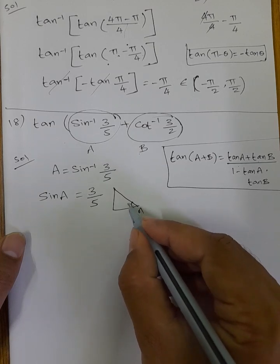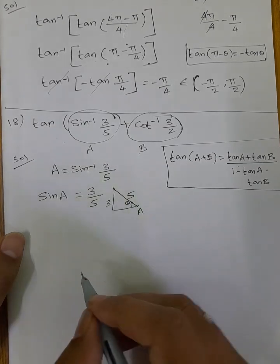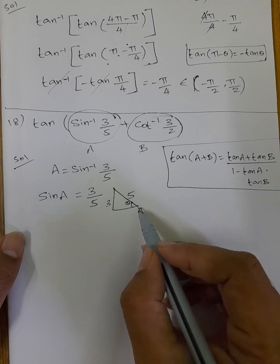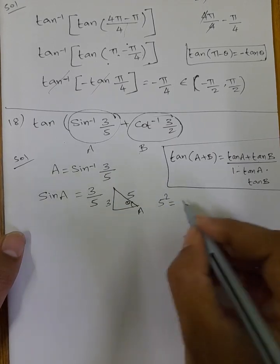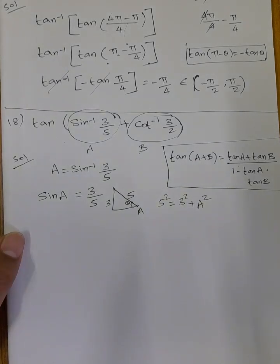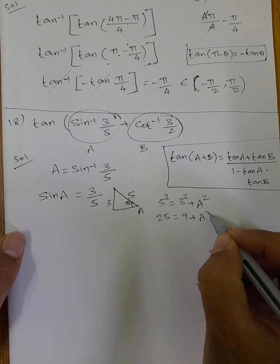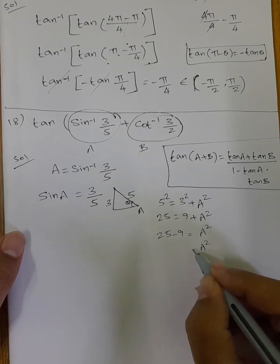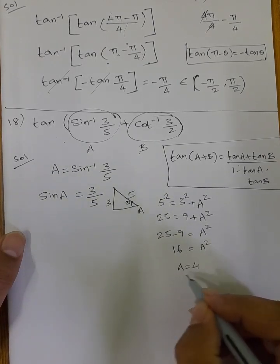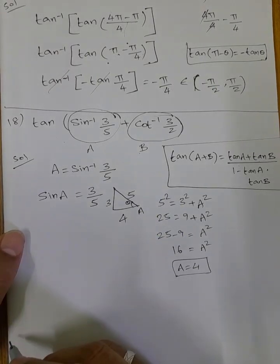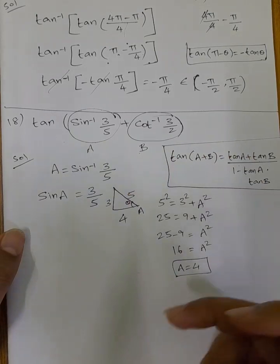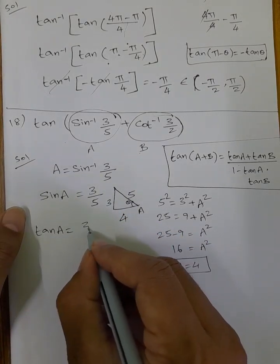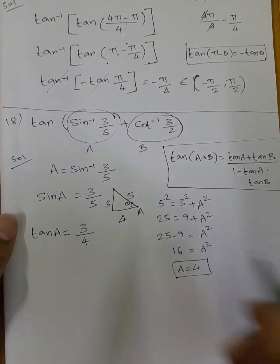For angle A, the opposite side is 3 and the hypotenuse is 5. By Pythagorean theorem, hypotenuse squared equals sum of the other two sides squared: 5² = 3² + adjacent². So 25 = 9 + a², giving a² = 16, so a = 4. Therefore tan A = opposite/adjacent = 3/4.